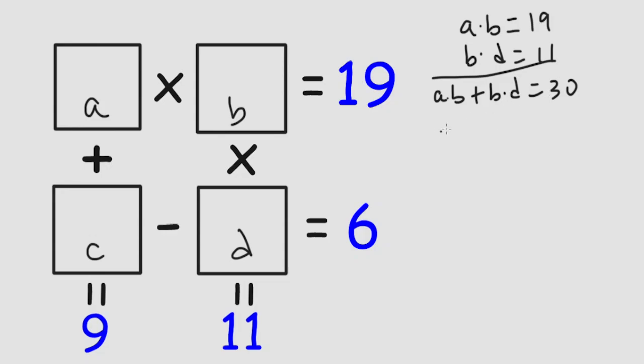Factor out a B, and you get B times A plus D is equal to 30.